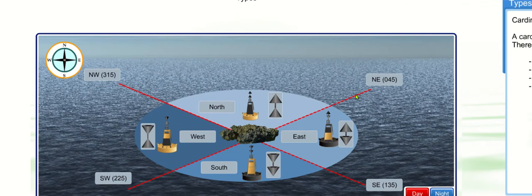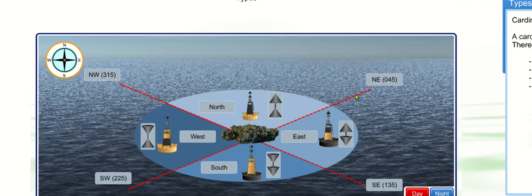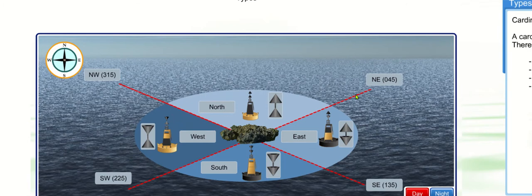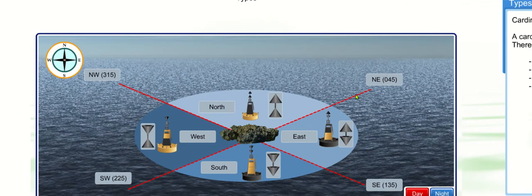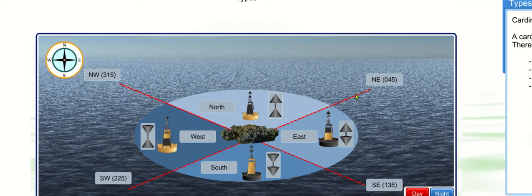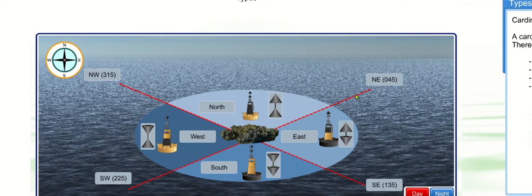Each of the buoys themselves are yellow and black, and the conventions that we use - because they're pillar or spar, it's very hard to identify - so it's top marks that would indicate during the day which buoy it is. So if you can see a silhouette, if you can see the colors, then that's even better.